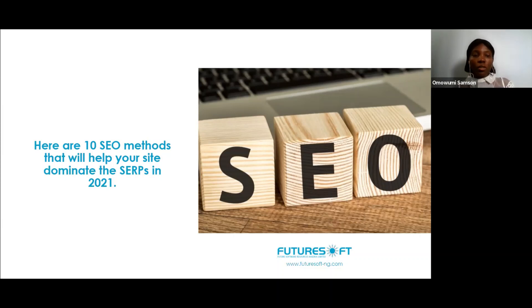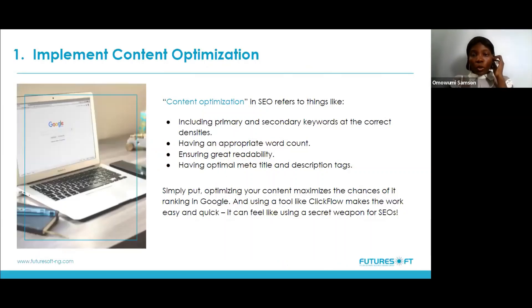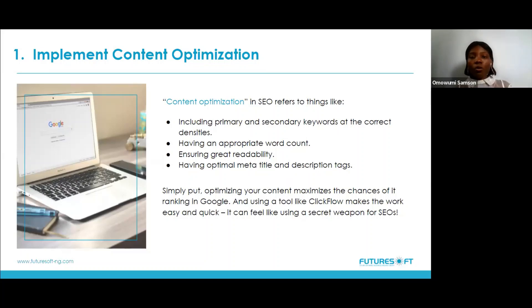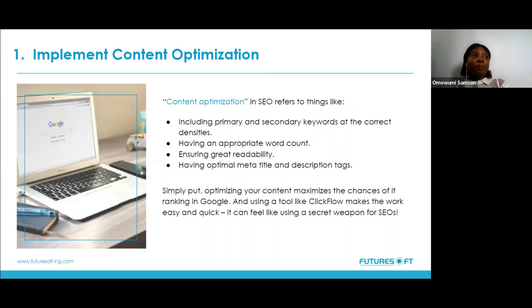Now the main discussion: the 10 SEO methods that will help your website rank and dominate the search engine results page. First is content optimization. This refers to including primary and secondary keywords at the correct density — not bombarding your website with too many keywords. When it comes to content creation, it's also important to know the appropriate word count. For a normal web page or landing page, it's around 300 to 600 words; for a blog post, maybe 1,000 to 2,000.